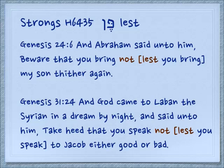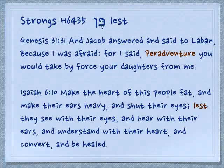Genesis 24.6: 'And Abraham said unto him, beware that you bring not my son thither again' — we could translate it 'lest you bring him there.' Genesis 31.24: God came to Laban in a dream and said, 'Take heed that you speak not to Jacob, either good or bad.' Genesis 31.31: Jacob answered, 'Because I was afraid, for I said, peradventure lest you would take by force your daughters from me.'